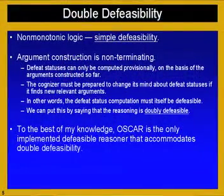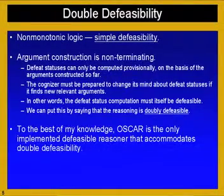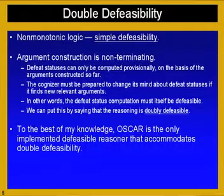When people think about defeasibility, at least in AI, they're usually coming from non-monotonic logic. Non-monotonic logic is about what we might call simple defeasibility — the observation that if you add new information, you may have to take things back. There's a further problem: in a rich language, argument construction is non-terminating. That means the search for defeaters is non-terminating. If the search for defeaters is non-terminating, then the computation of defeat status is going to be non-terminating too, because there's always the possibility that you're going to produce further arguments — without any new information — that are going to make you take things back.